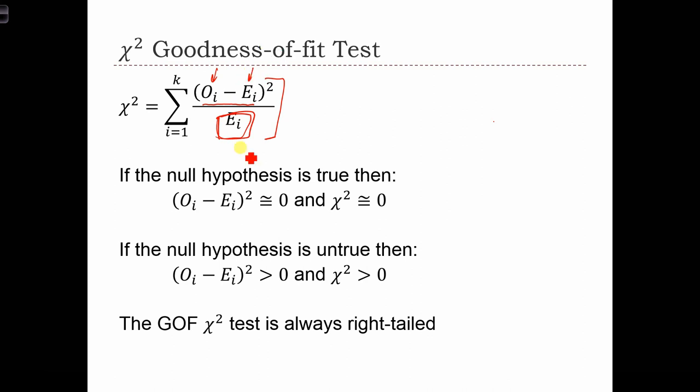In that case, the difference between O_i and E_i is going to be close to zero. And therefore, when we sum across all the i's of these differences, we'll find that the chi-squared will be close to zero if the null hypothesis is true.